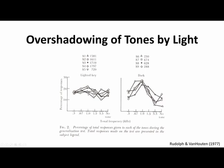For the pigeons trained with a lighted key, the generalization curve is very shallow, almost flat — there's maybe a little more responding at the one kilohertz they were trained on, but it's minimal. The pigeons trained in the dark, with no visual cues, show higher responding at the trained frequency and less responding on either side, demonstrating that their behavior came under stimulus control of the tone. The presence of the light overshadowed what they learned about the tone.